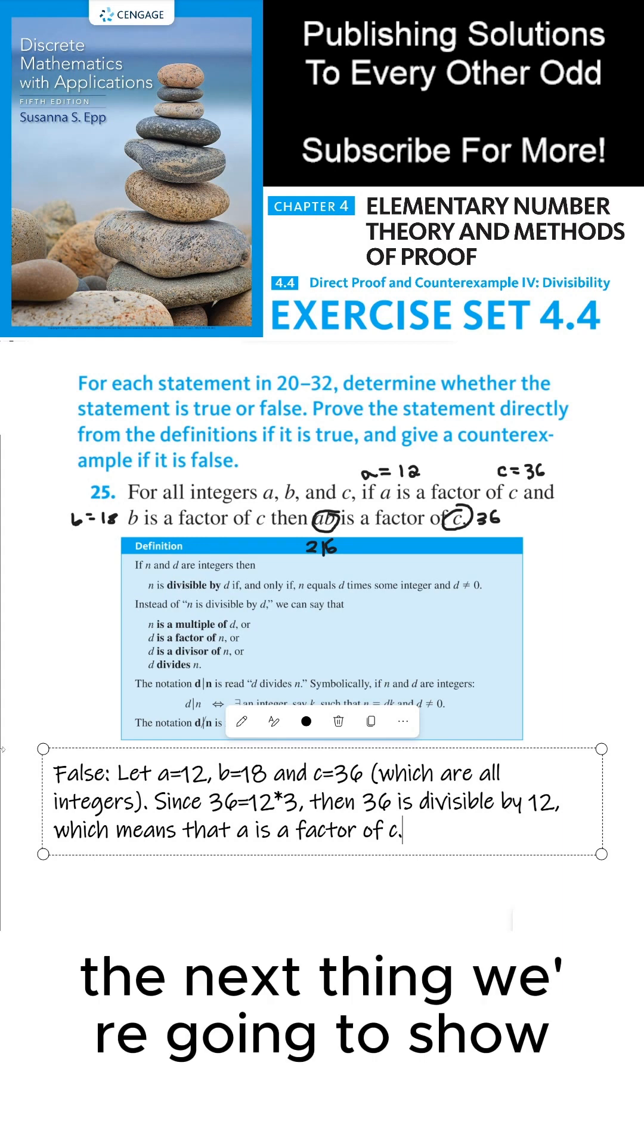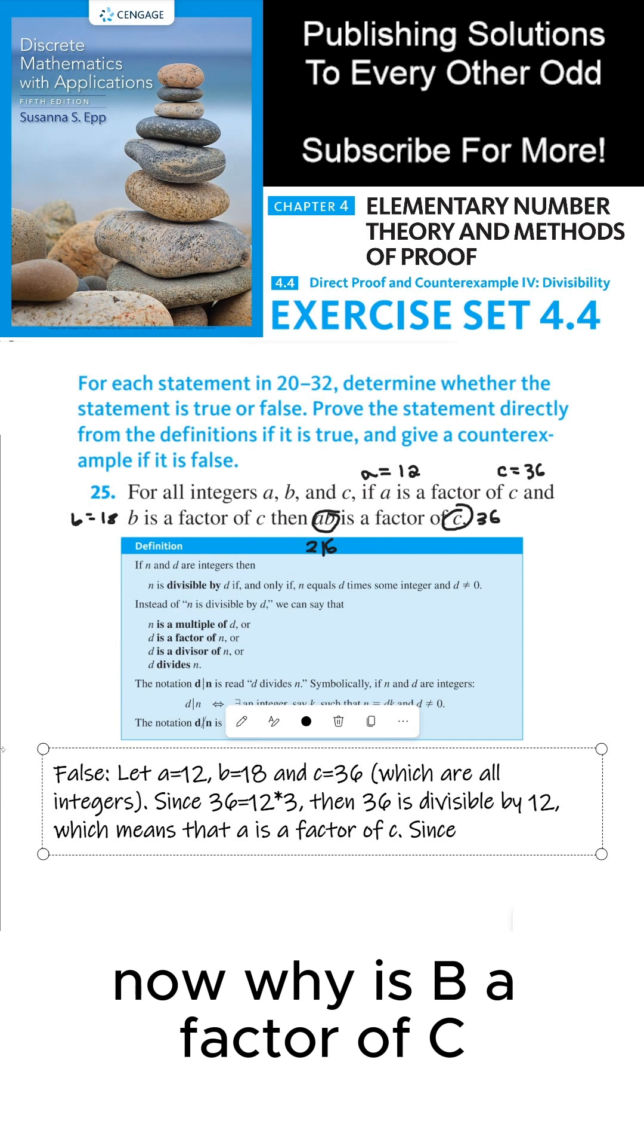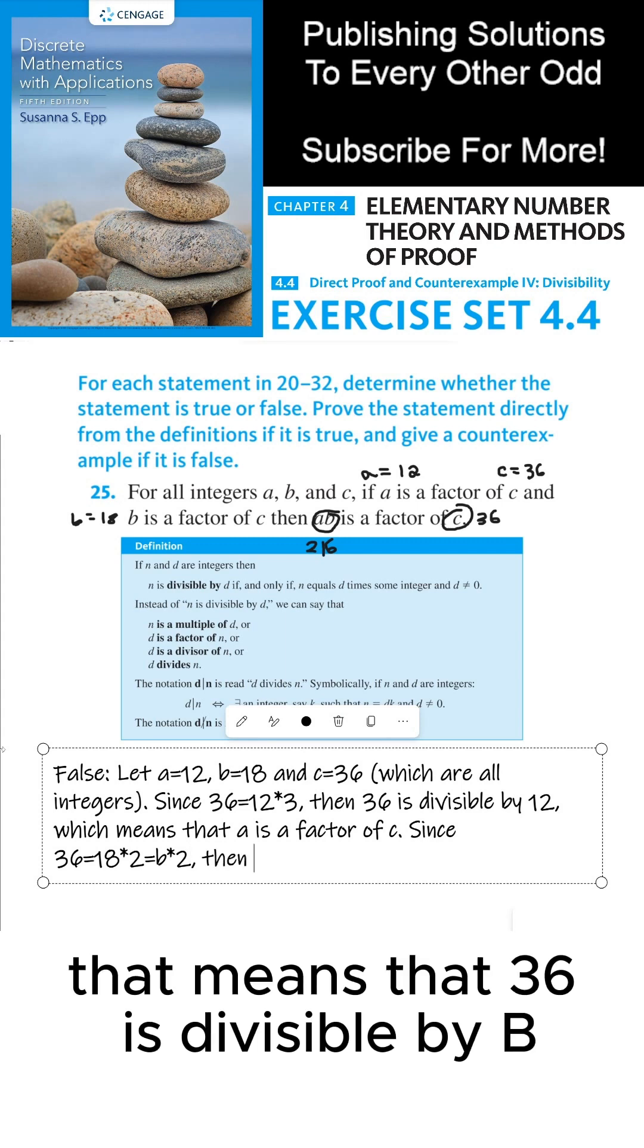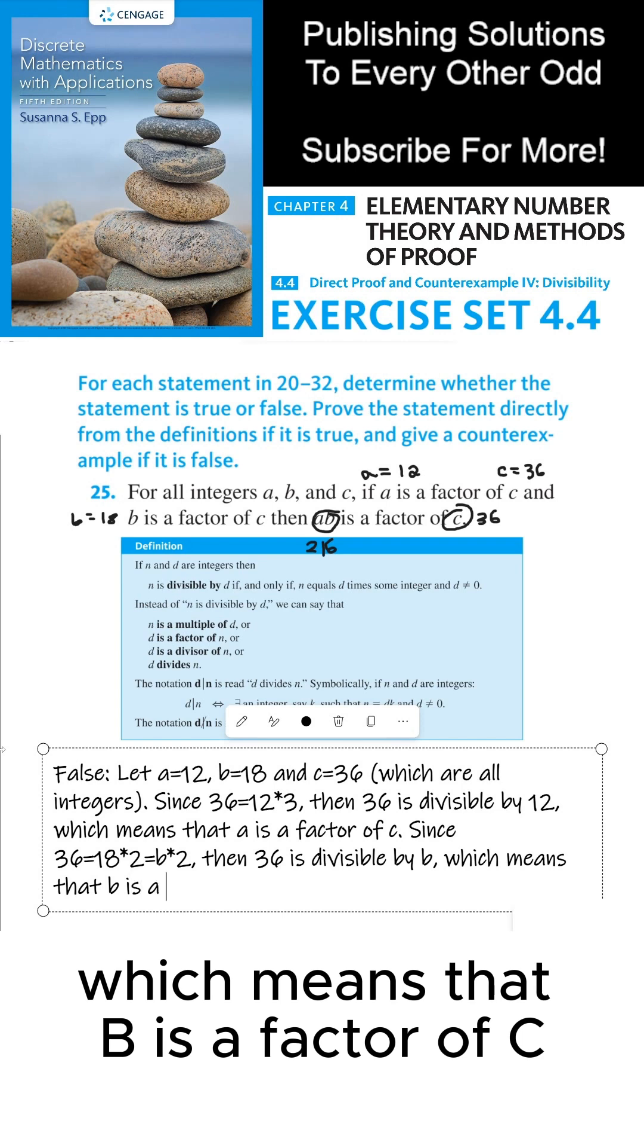The next thing we're going to show is that b is a factor of c. Now why is b a factor of c? Well, 36 is 18 times 2, which is b times 2. That means that 36 is divisible by b, which means that b is a factor of c, which is 36.